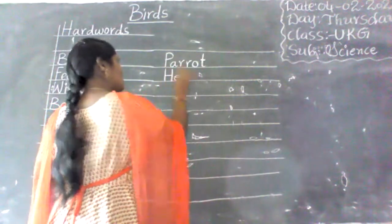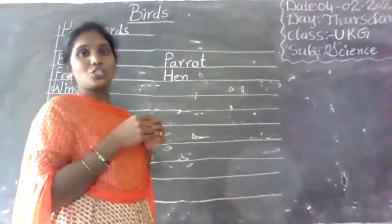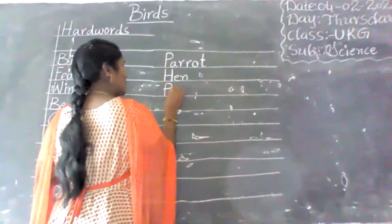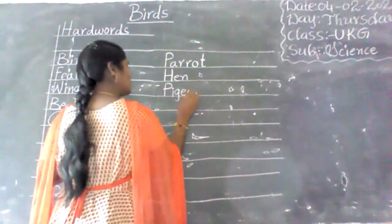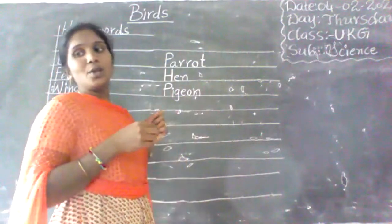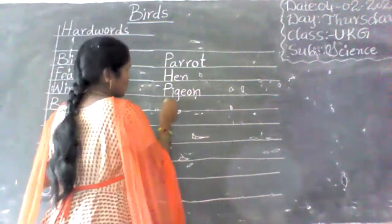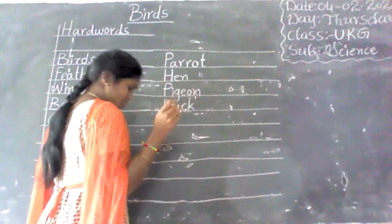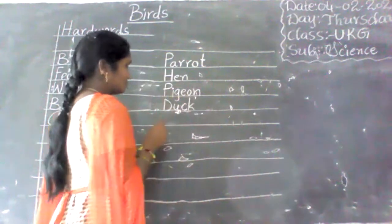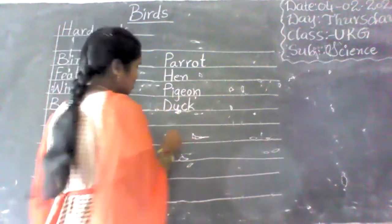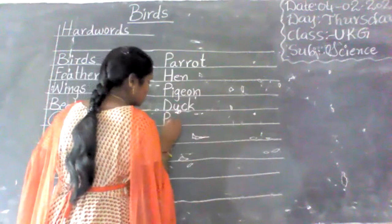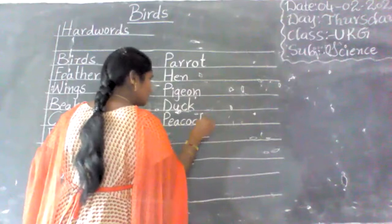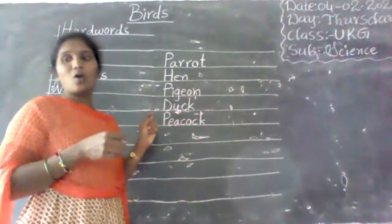Hen — H-E-N. Pigeon — P-I-G-E-O-N. Duck — D-U-C-K. Peacock — P-E-A-C-O-C-K.